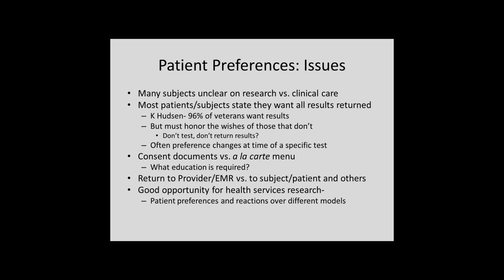We've often tried to have an a la carte menu — the idea that I want this result but I don't want that result. The only place I see that in medicine, really, is in cardiac resuscitation: I want an ET tube but I don't want to be shocked, I want drugs but not something else. In general, if you're a practicing internist you would never say I want to know about my lungs but don't tell me about my kidneys. That's not really an option.